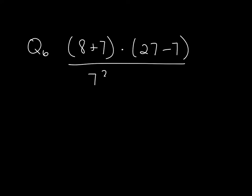All right, let's look at the next question we have in this section, question 6, which is 8 plus 7 times 27 minus 7, all divided by 7 squared minus 19.